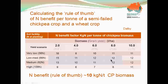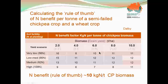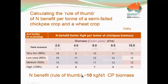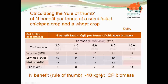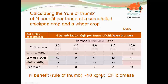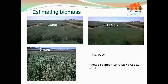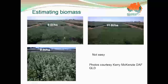A quick check with faba beans showed they were not greatly different to the nitrogen benefits from chickpeas, maybe contributing a little bit more at the higher soil fertility points. That's a difference because faba bean spares more nitrogen compared to chickpea, but it's essentially quite similar in nitrogen benefit.